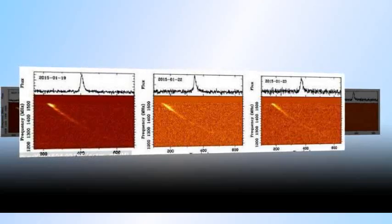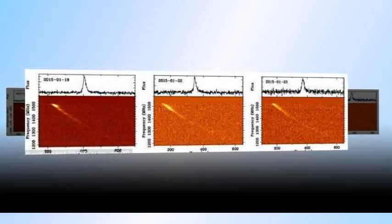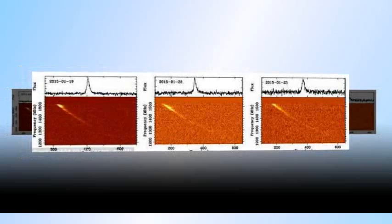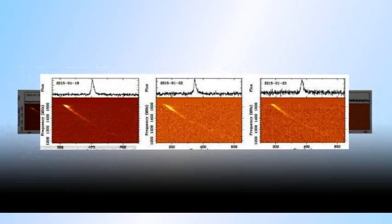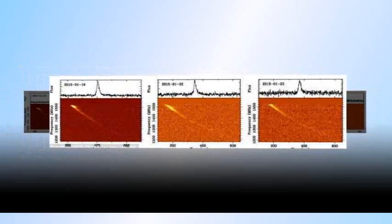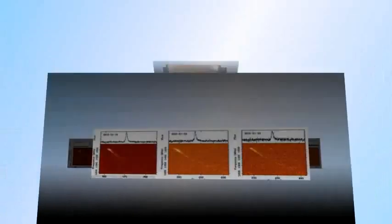For years, scientists have been trying to uncover the source of mysterious radio signals being picked up in Australia. Theories have ranged from evaporating black holes to extraterrestrial communication and mergers of neutron stars.